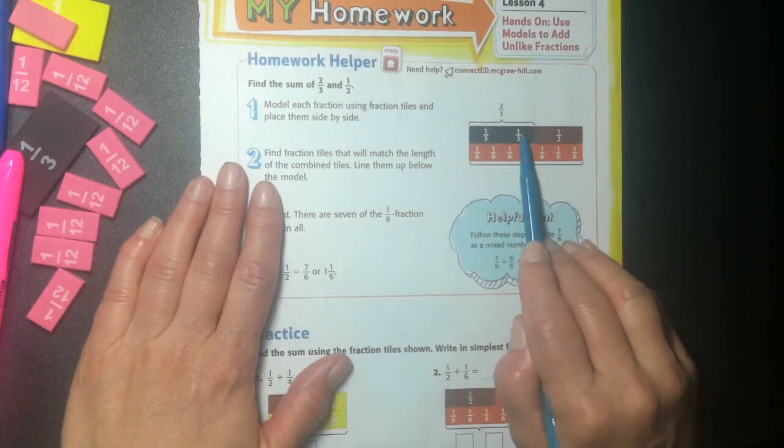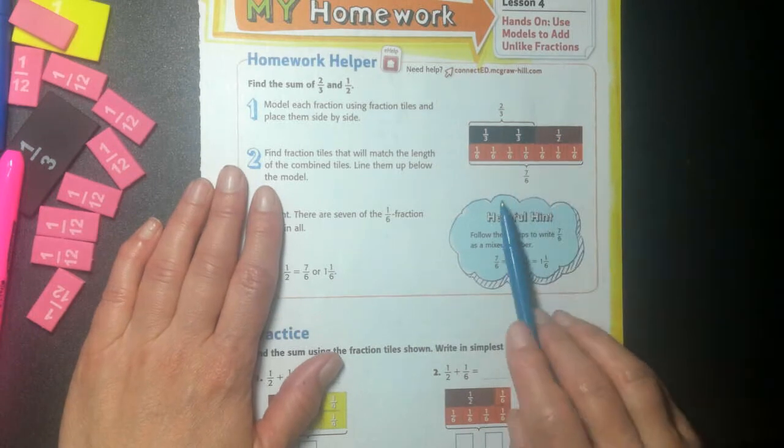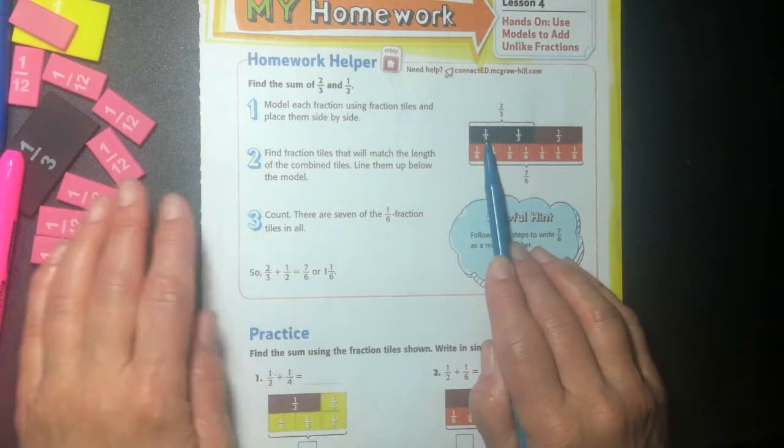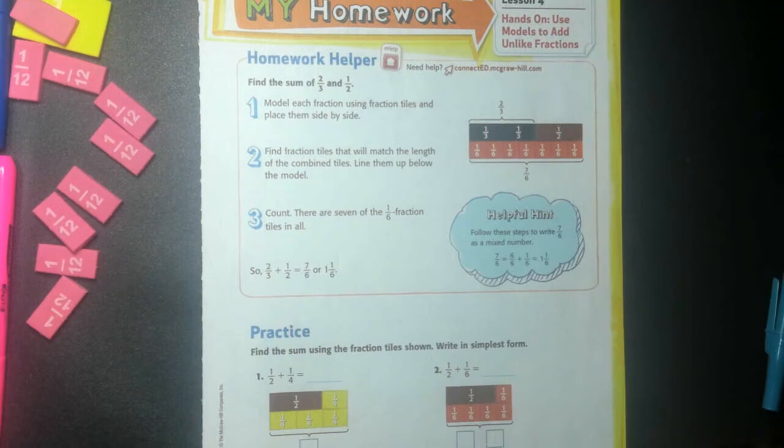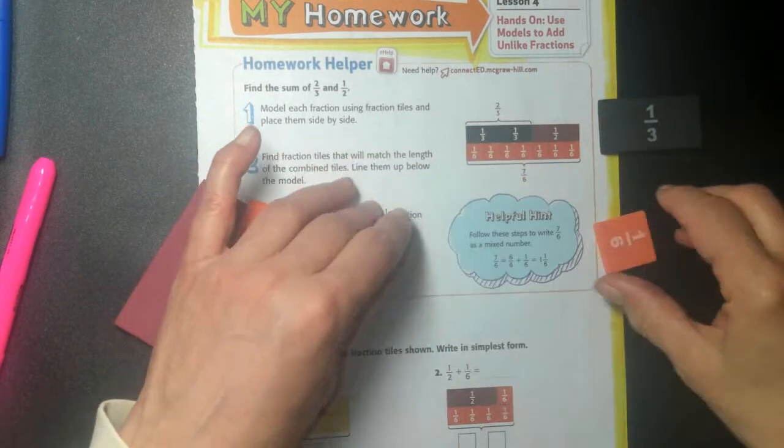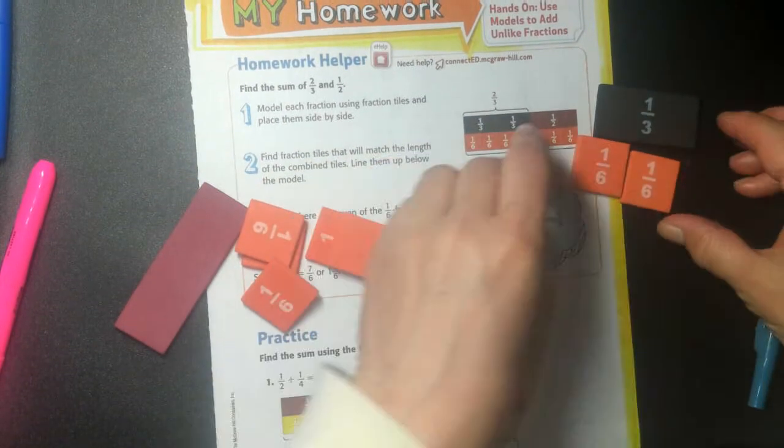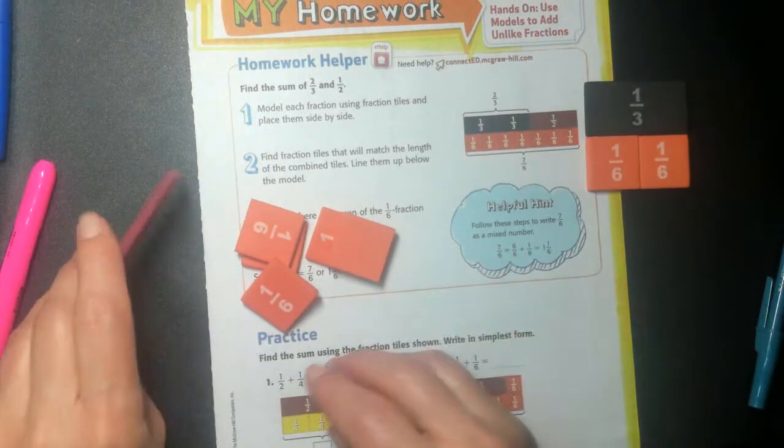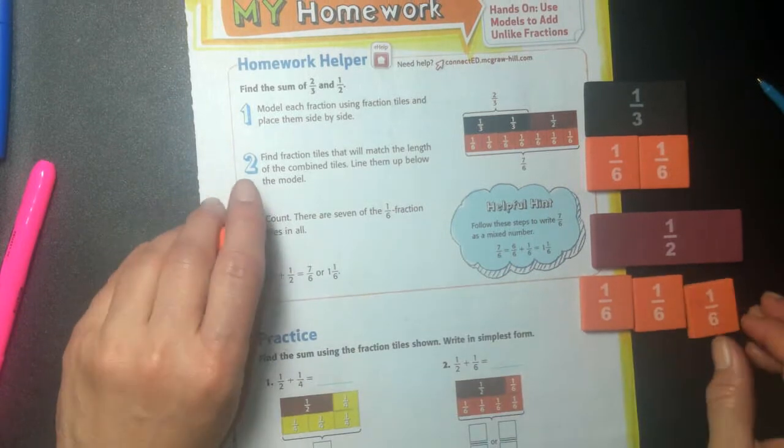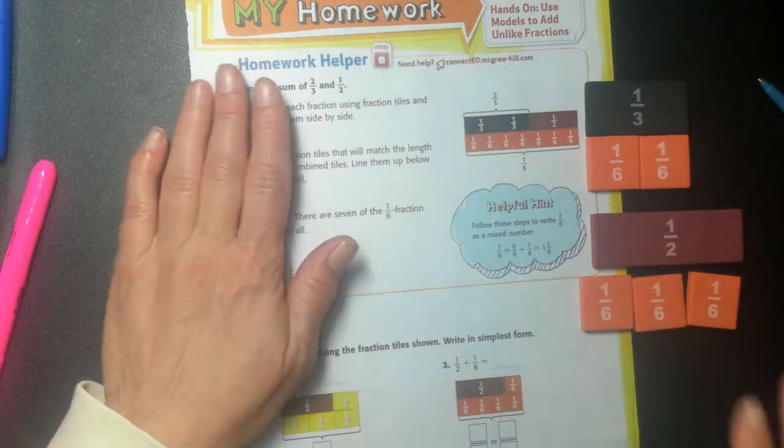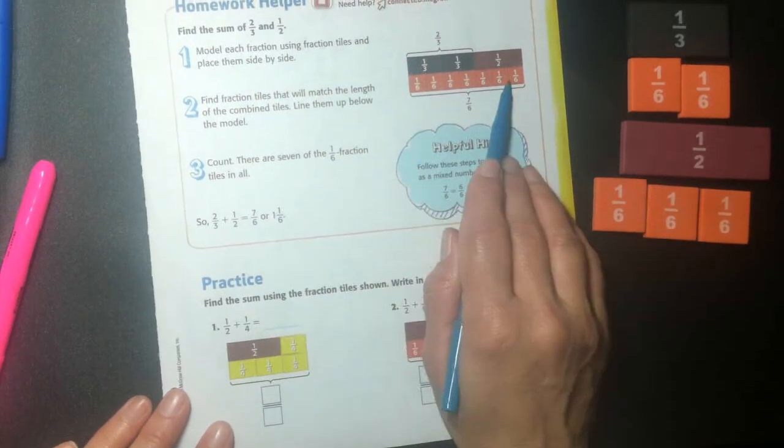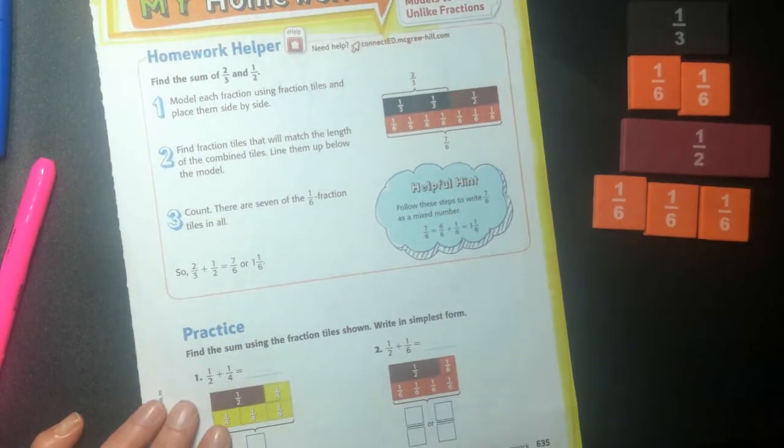So one third plus one third plus one half is 1, 2, 3, 4, 5, 6, 7 sixths, right? One third, I don't have enough sixths to show you, right? But one third is the same as two sixths, right? And one half is going to be the same as three sixths. I don't have enough to do a real demonstration, so we'll have to use theirs. So seven sixths. So seven sixths, hopefully you could see, seven sixths is going to be bigger than one.